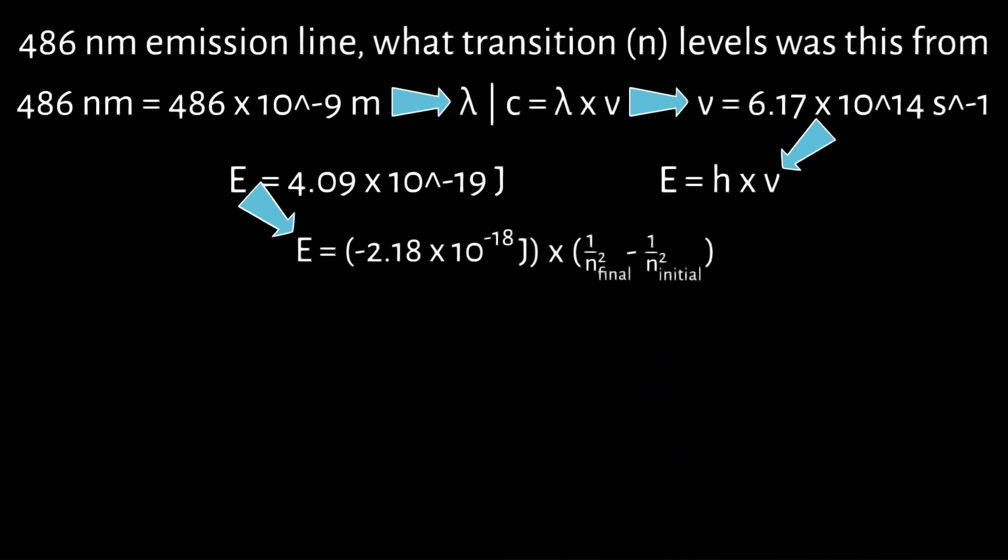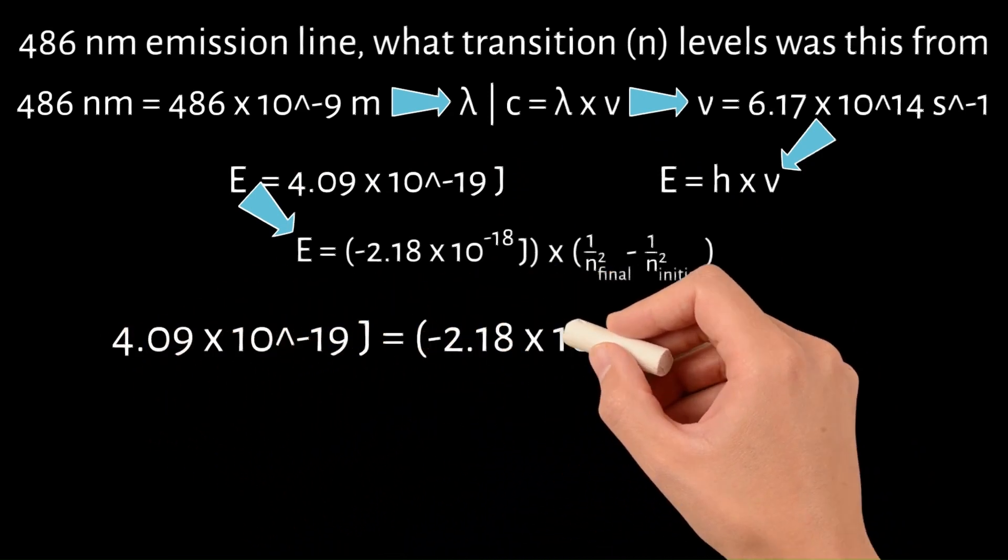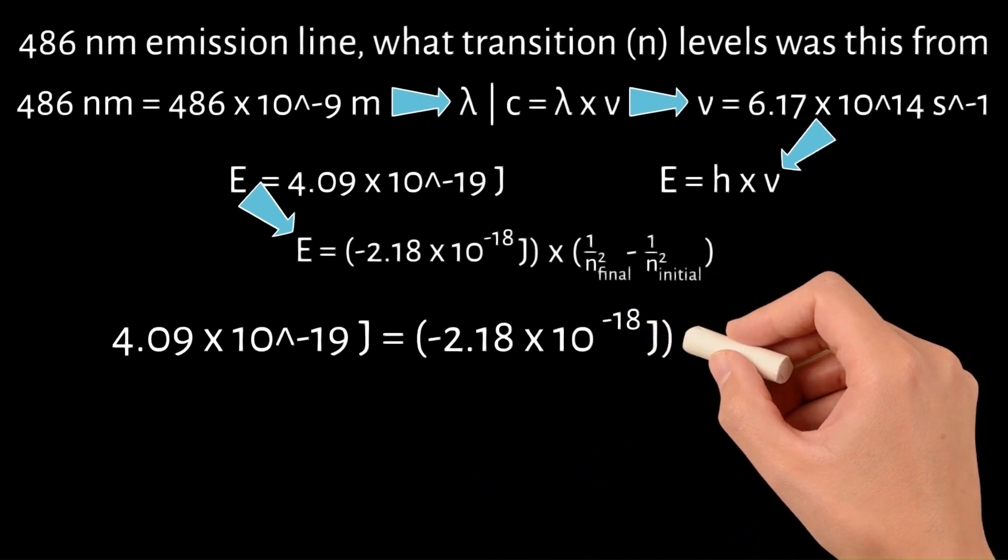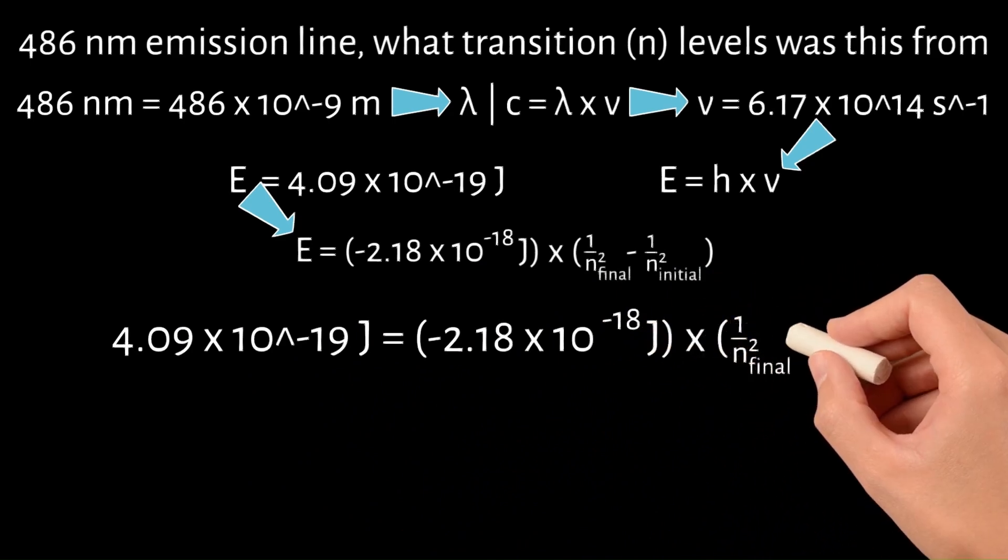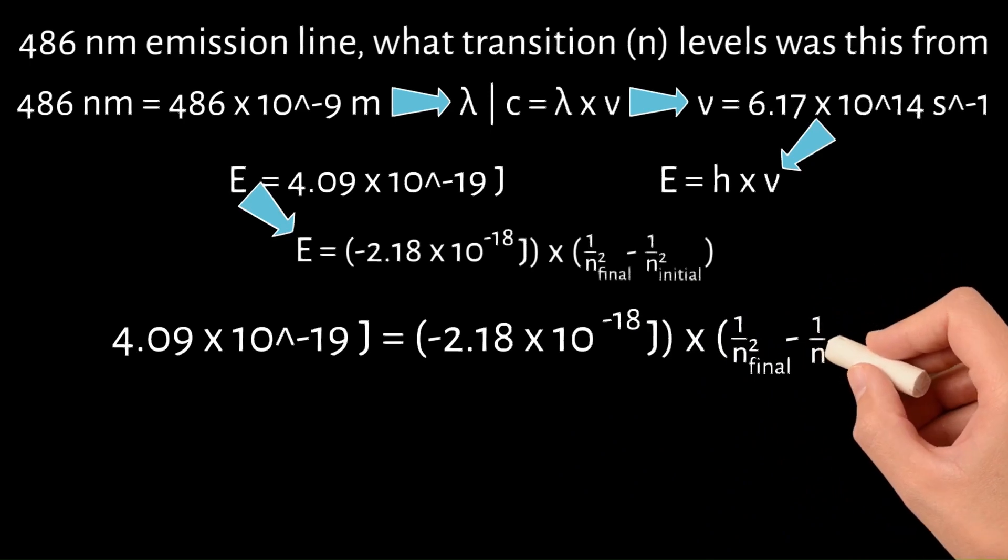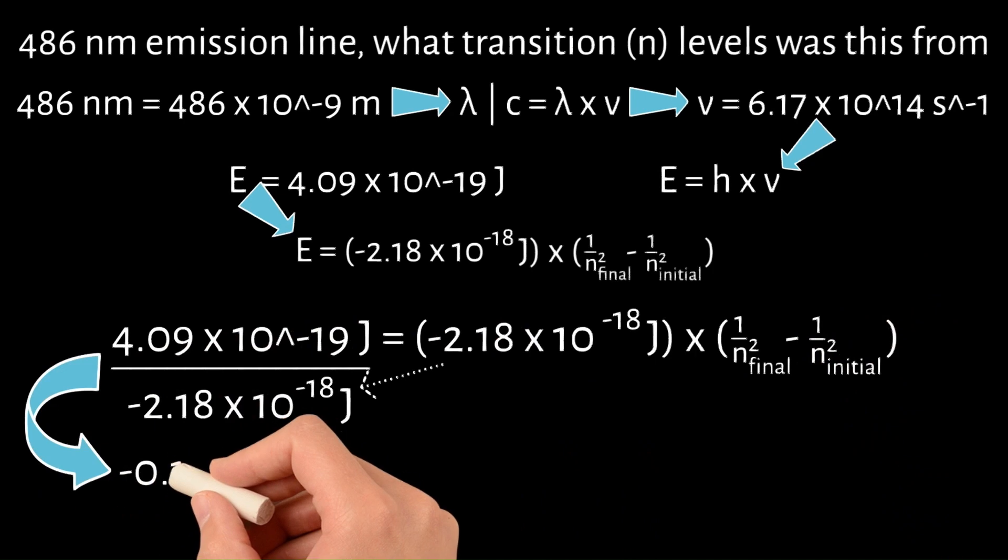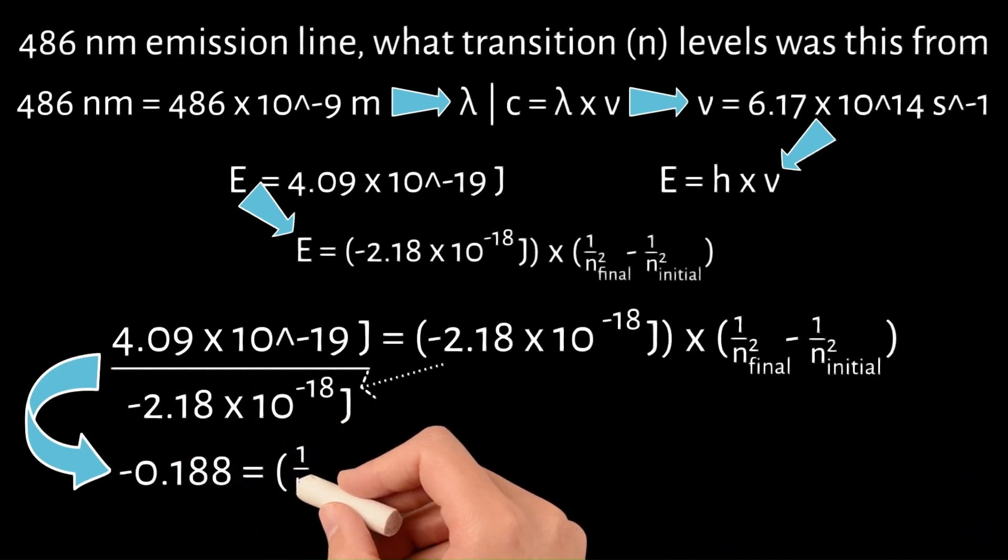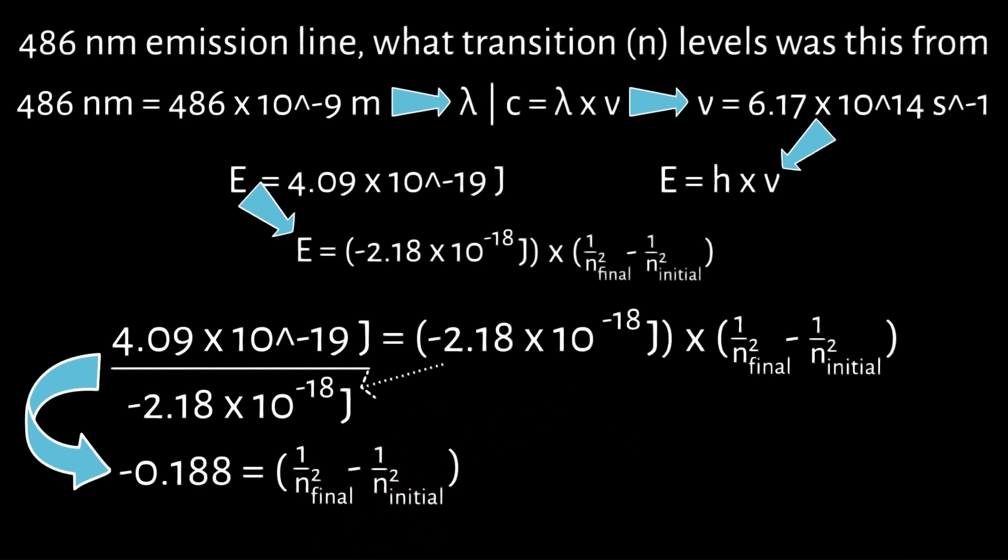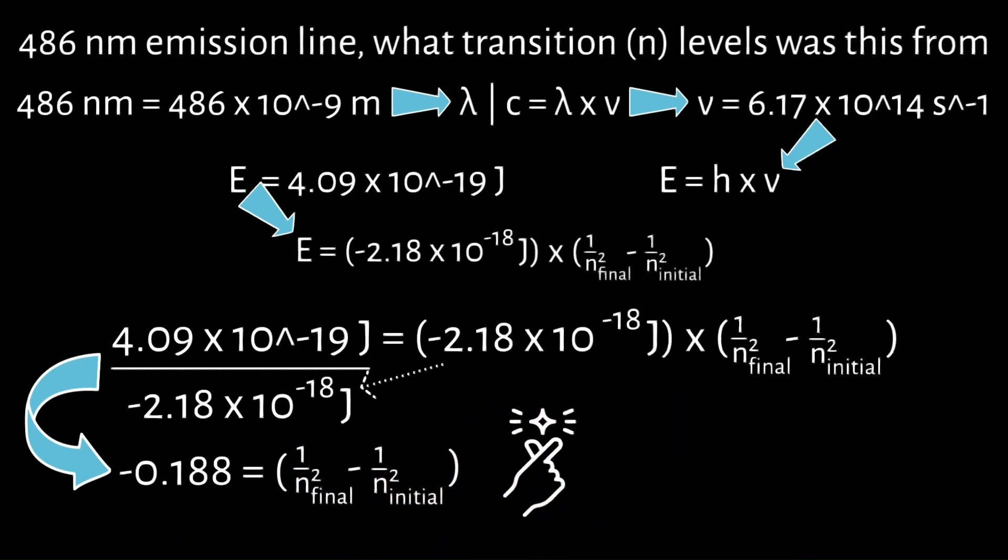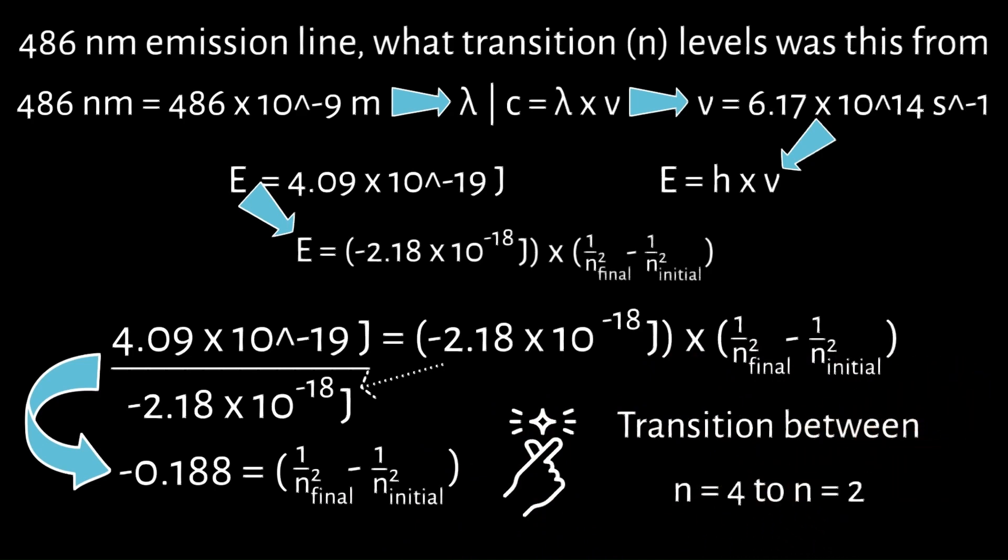Plugging that into the Bohr's model equation, we get E equals 4.09 times 10 to the negative 19th joules equals negative 2.18 times 10 to the negative 18th joules times 1 divided by n squared final minus 1 divided by n squared initial. Doing some algebra, we get negative 0.188 equals 1 divided by n squared final minus 1 divided by n squared initial. And plugging in various integers, we find the transition between n equals 4 to n equals 2.